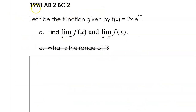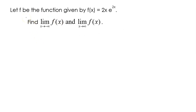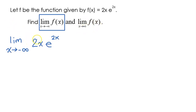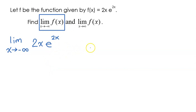Let's move on to problem number 2 from the 1998 exam. Let f be the function given by f(x) equals 2x times e to the 2x. Find the limit as x approaches negative infinity of f(x), and find the limit as x approaches positive infinity. I'm going to show you how to do this two different ways: first using techniques from Unit 1, then using derivatives and L'Hôpital's Rule from Unit 4. If you're still in Unit 1, focus on the first method; if reviewing for the AP exam, you may want the more advanced method.